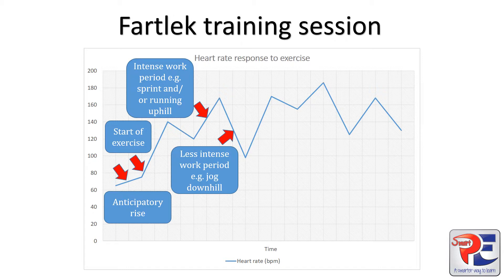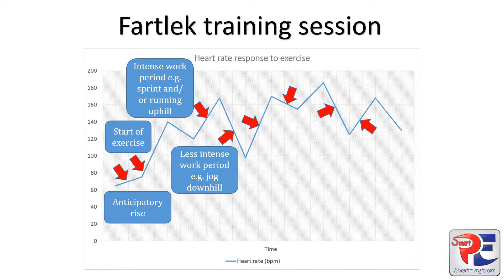Now in your exam, you could interpret any part of this graph, such as these sections. Just remember to state what is happening — for example, the heart rate increases, decreases, or it might stay the same. Then remember to interpret: we must give meaning as to why it is happening. So these increases or decreases that we identify could be because the intensity of the fartlek session could change because of a change in pace, a change of intensity, or a change in terrain.